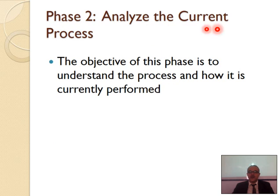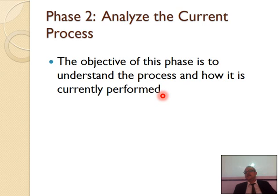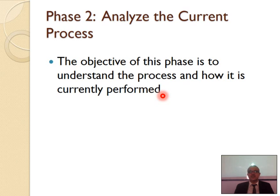Phase two: you start to analyze the current process. The objective is to understand the process and how it is currently performed. For example, in a hotel, we want to improve quality. We noticed that customers are having a very difficult time with reservation. So here is an opportunity — how can we improve our reservation system? We start with phase one, identify the opportunity: what is the problem with reservation? They call and can't reach someone, or they order online and don't receive confirmation. Then you analyze the current existing process for reservation.